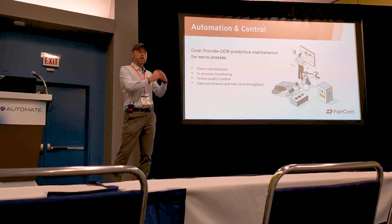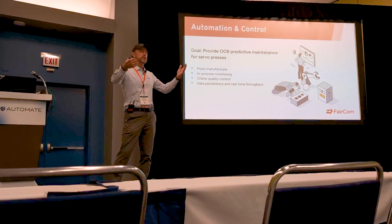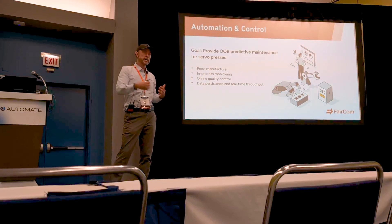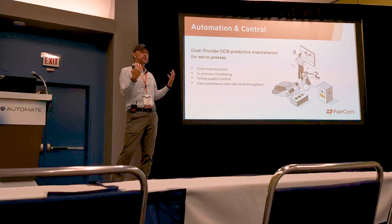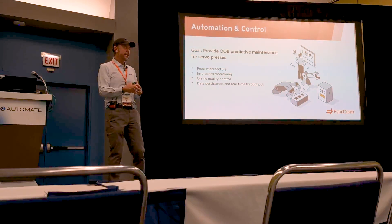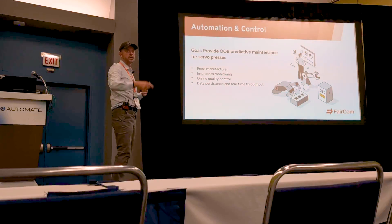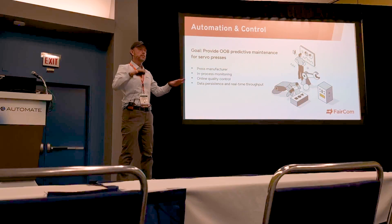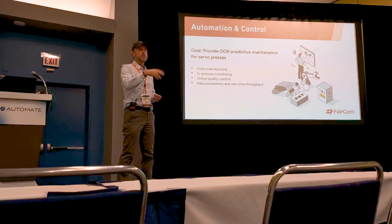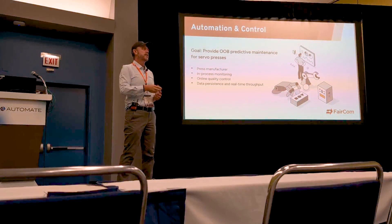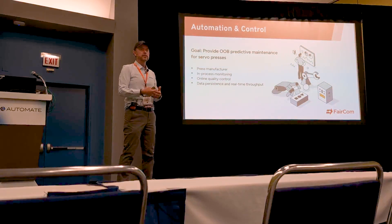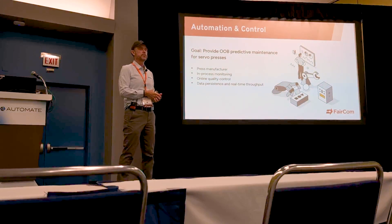This manufacturing company is already trying to bypass the control layer — they want you to get the data directly from the machine. They're building a layer on the machine that automatically sends data to a different level of information. They're completely reshaping how they think about data. In the past, data was just tags on the PLC for code to control the press. Now they want to make all their data available for people to analyze the press in a smarter way.